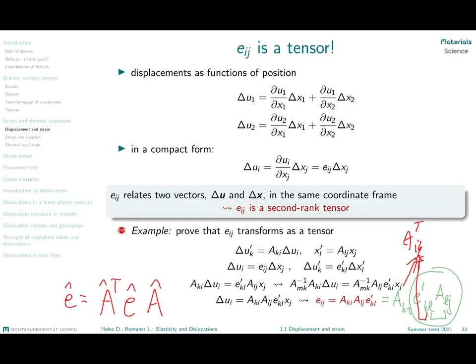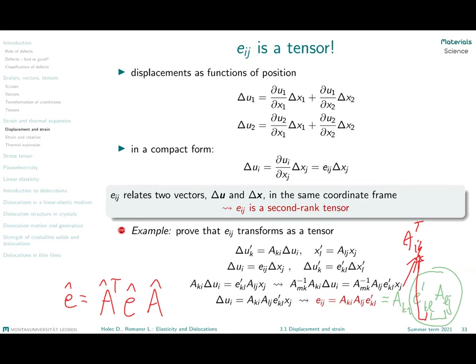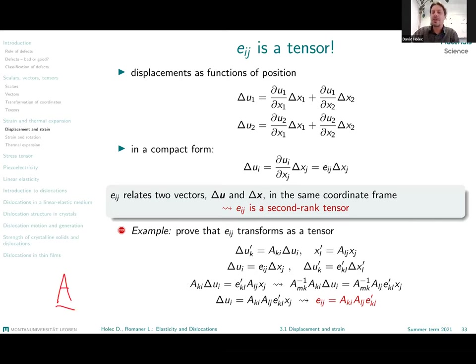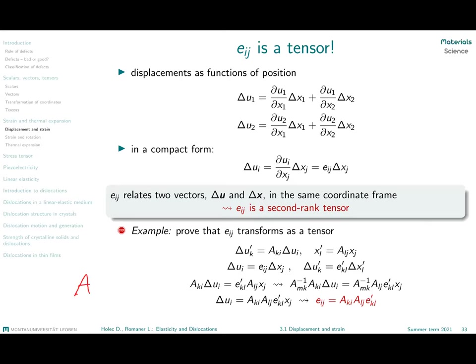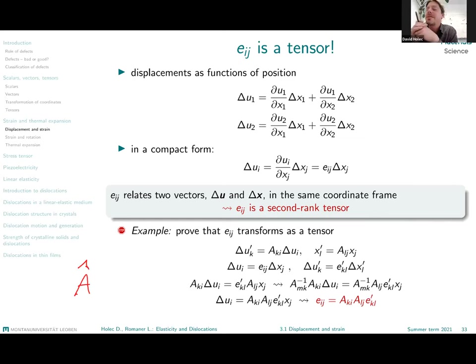Student: What does the symbol above E and A mean? Professor: That symbol just represents that it is a matrix. In continuum mechanics, people sometimes use two underlined curves for a matrix. If you're working just with matrices, you would just write A. It has nothing to do with functionals or operators — it is simply a notation for a matrix.